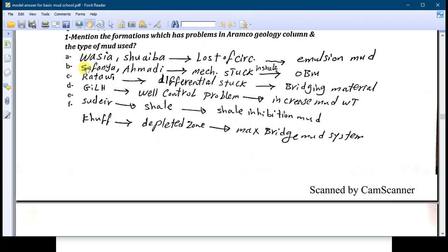If you take total loss you can drill blind drilling and use mud cap drilling to avoid any well control issue. Number B: Stefania and Ahmadi have some mechanical shale or mechanical stuck in those shales, so we use oil-based mud and increase the mud weight. Number C: Ratawi. Ratawi is limestone or hard limestone so you may have differential stuck, so we use bridging material as preventive action. If we stuck, we use acid pill.